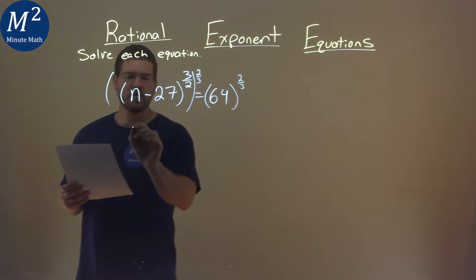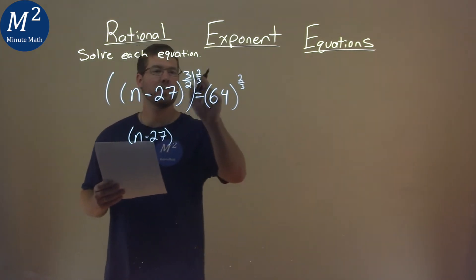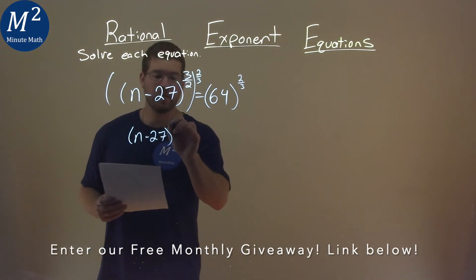Well, we still have our n minus 27 here, but 3 halves to the two-thirds power, we multiply these exponents. 3 halves times two-thirds is 1.